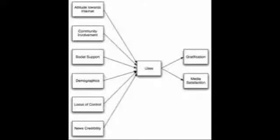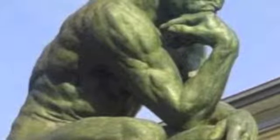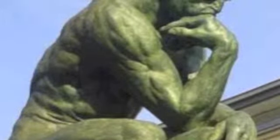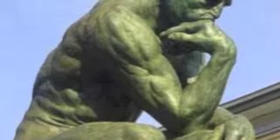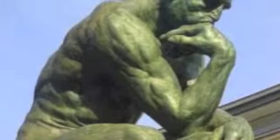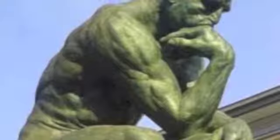The Uses and Gratifications model was proposed to contest the notion of a passive media audience. Under this model, researchers — usually using in-depth interviews to supplement survey questionnaires — studied the ways in which people use the media to satisfy various emotional or intellectual needs. Instead of asking what effects do the media have on us, researchers asked why do we use the media? Asking the why question enabled media researchers to develop inventories cataloging how people employed the media to fulfill their needs.